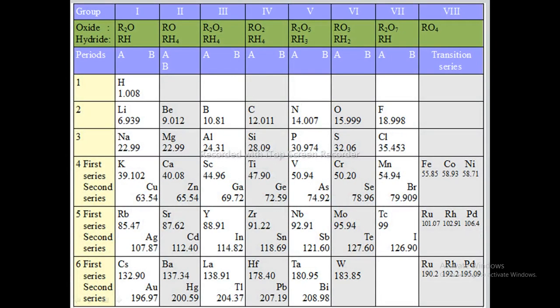Mendeleev focused on the compounds formed by the elements with oxygen and hydrogen, as they are active and form compounds with most elements. The hydrogen oxide formed by different elements was treated as one of the basic properties of an element for their classification. Mendeleev arranged all the 63 known elements in increasing order of their atomic masses. The original form of Mendeleev's periodic table contains six periods and eight groups.